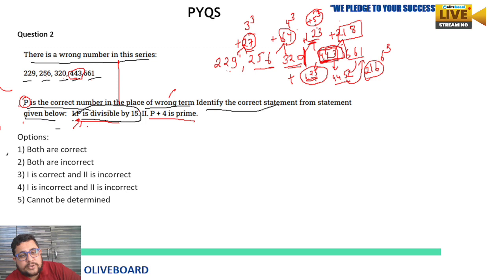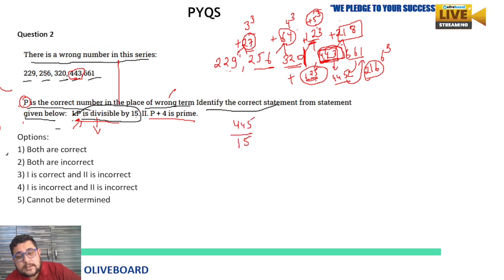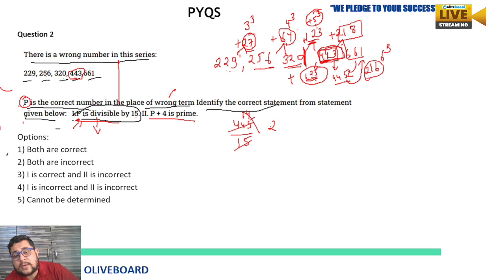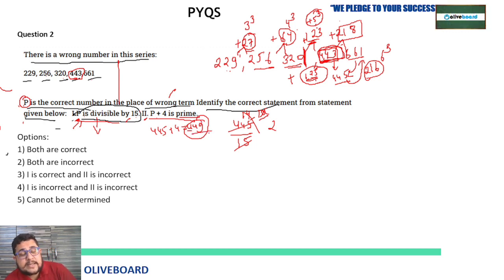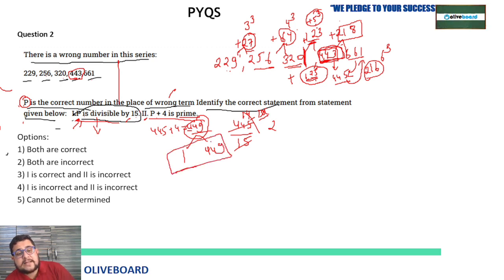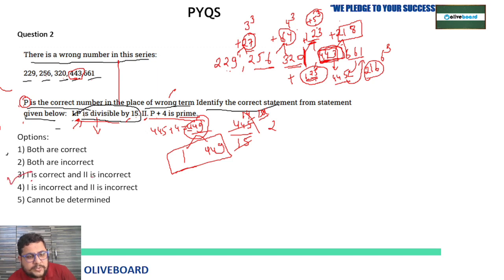Now verify the statements. Statement 1: P is divisible by 15 — is 445 divisible by 15? Checking: 15 × 29 = 435, remainder 10; not divisible. Statement 2: P + 4 is prime — 445 + 4 = 449. Is 449 prime? Yes, 449 is divisible only by 1 and 449 itself, so it is a prime number. Therefore only Statement 2 is correct, and Statement 1 is incorrect — option third is the answer.